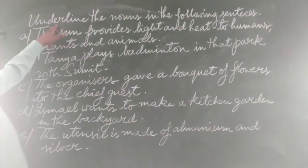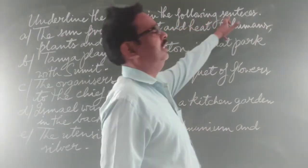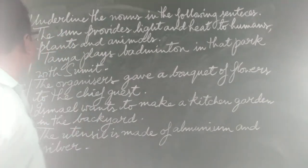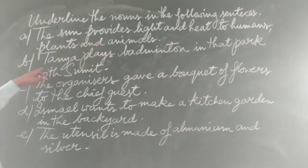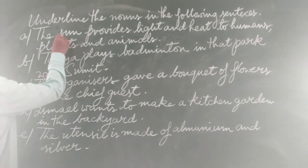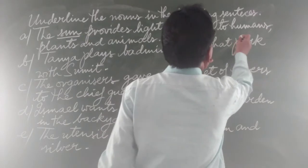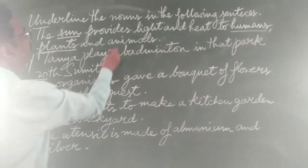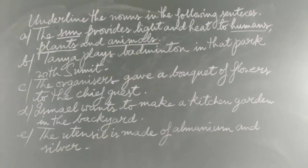Now students, let's look at this exercise: underline the Naam in the following sentences. You have to identify the Naam and underline it. Look at the first sentence A: 'The sun provides light and heat to humans, plants and animals.' The naming words here are: sun, light, heat, humans, plants, and animals. These are the nouns in this sentence.